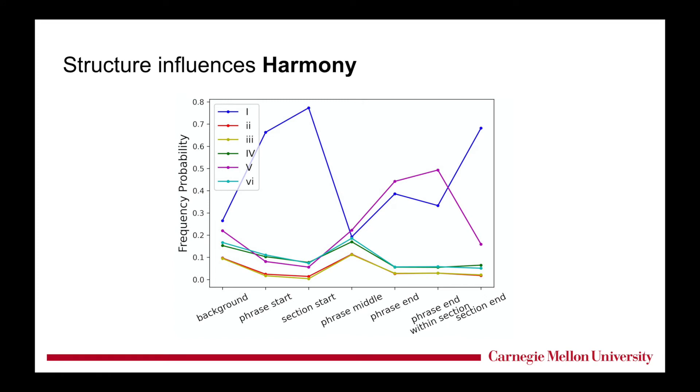Now let's look at some data. First, this is a figure showing how harmony interplays with different levels of structure in major mode. This figure has two axes. Vertical axis represents probabilities, but the horizontal axis is not time. It represents different locations in a song.